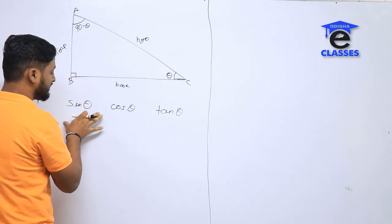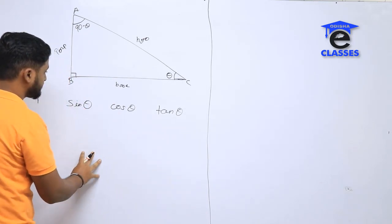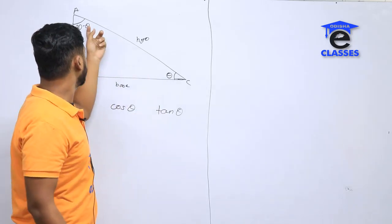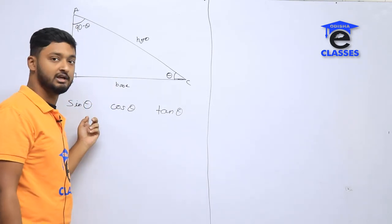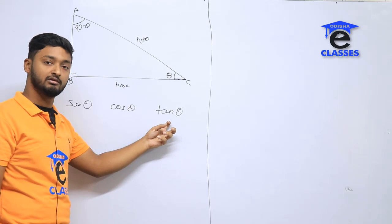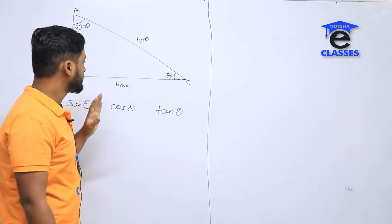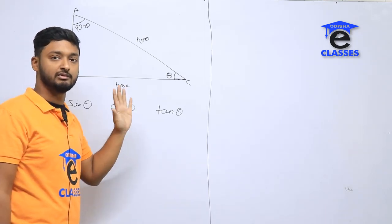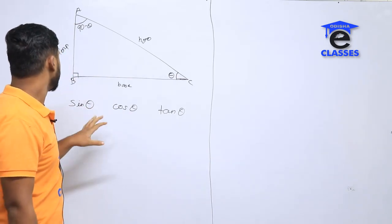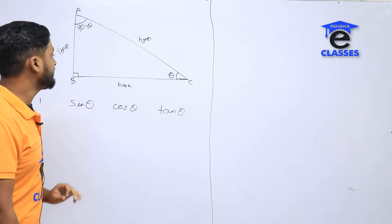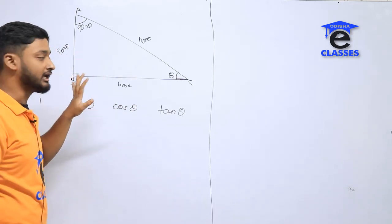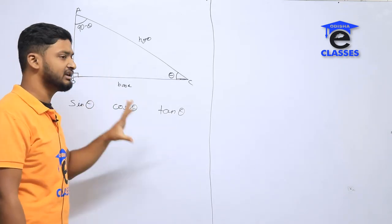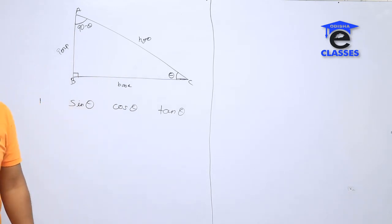We have three trigonometry functions. We define these functions in the right angle triangle, because this function is valid when the right angle triangle is used. We write it in the right angle triangle — sin, cos, and tan.